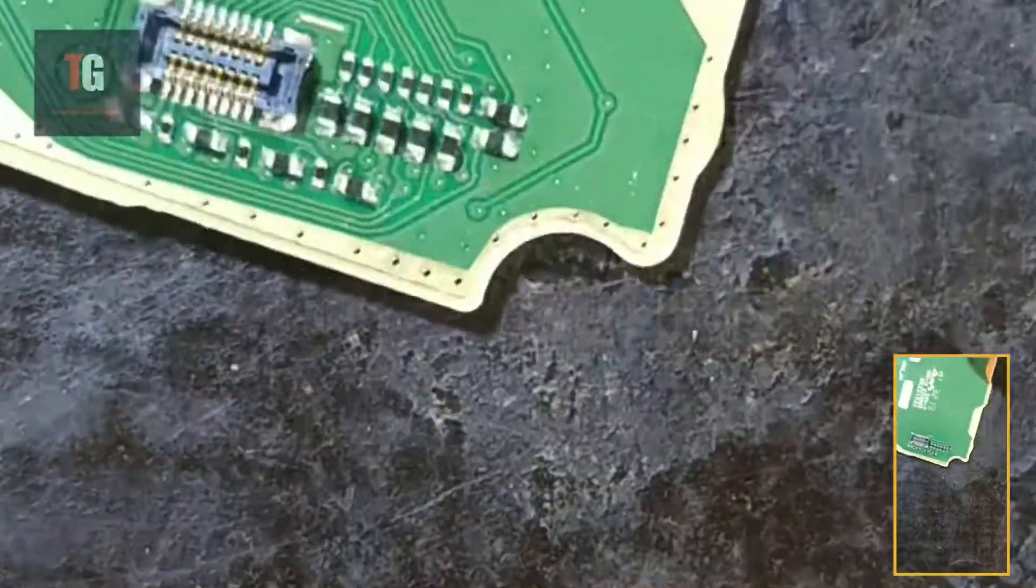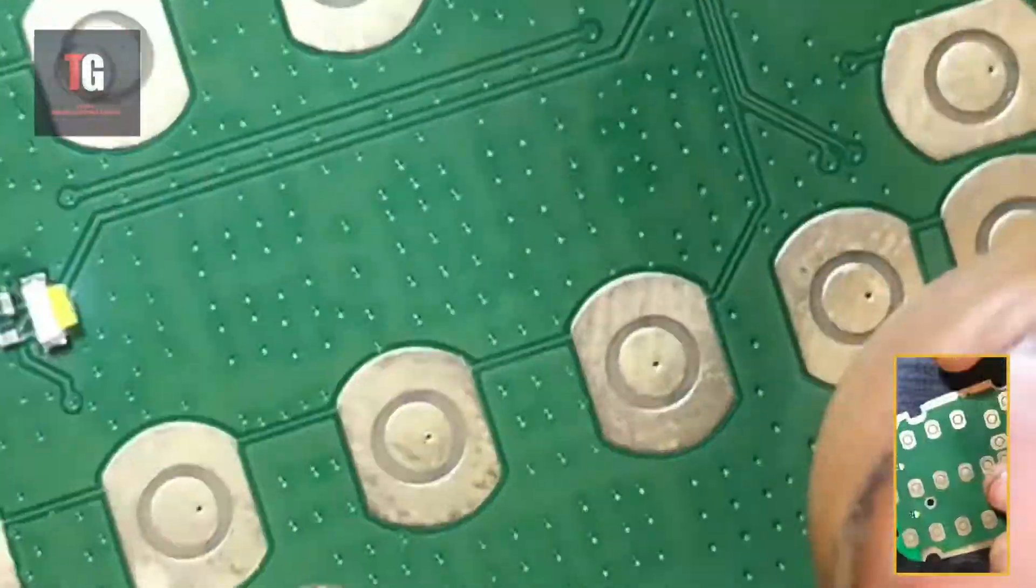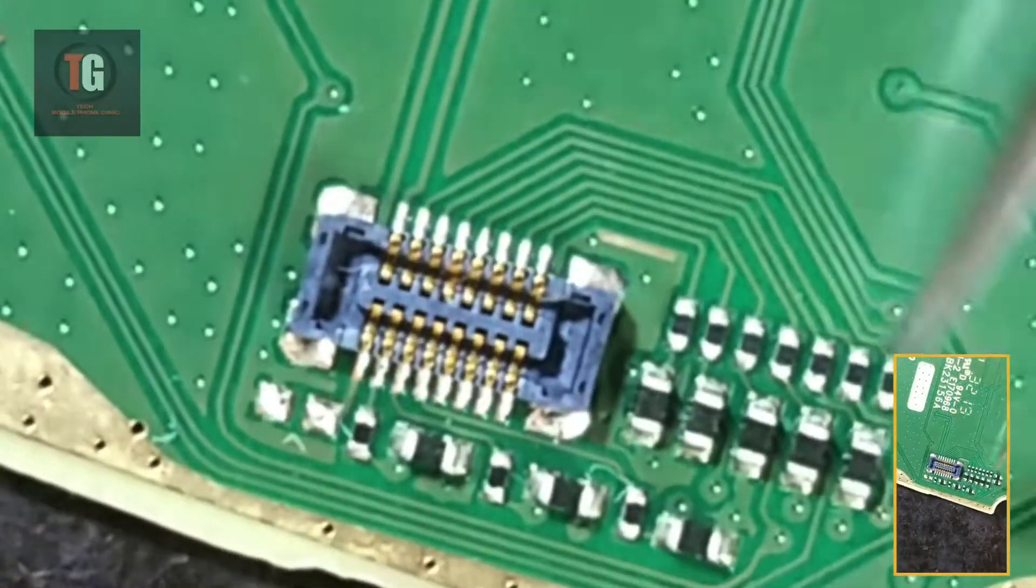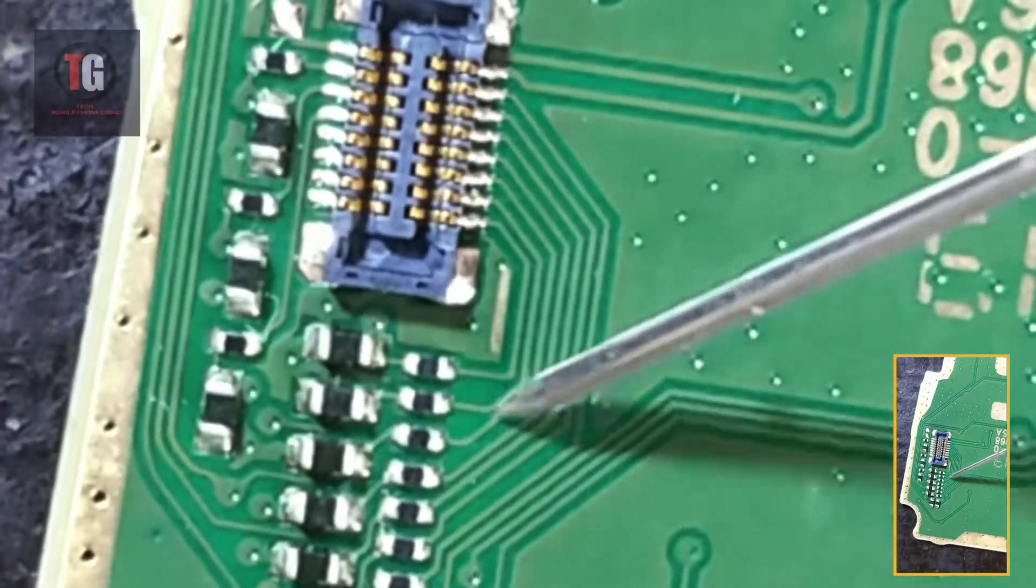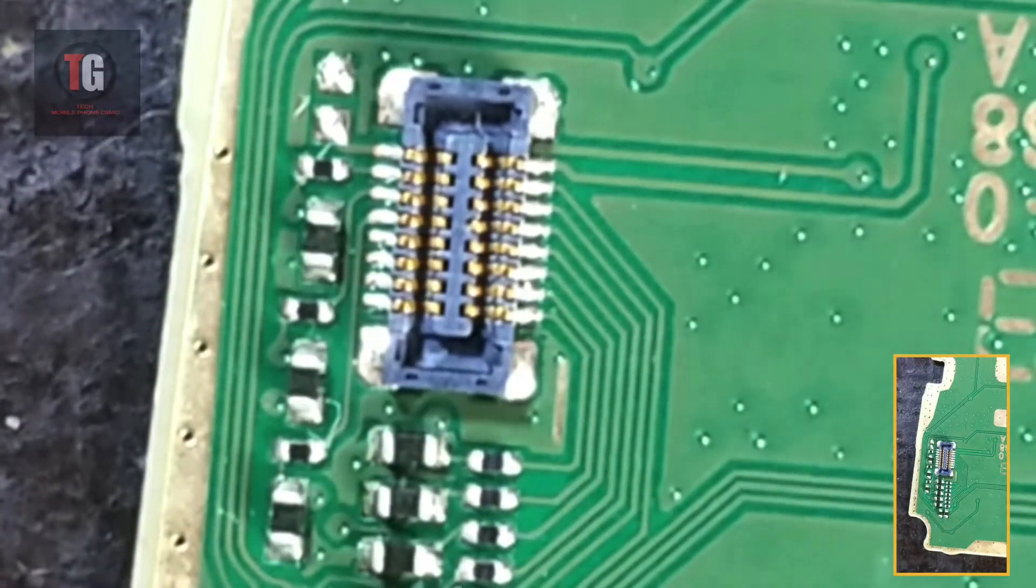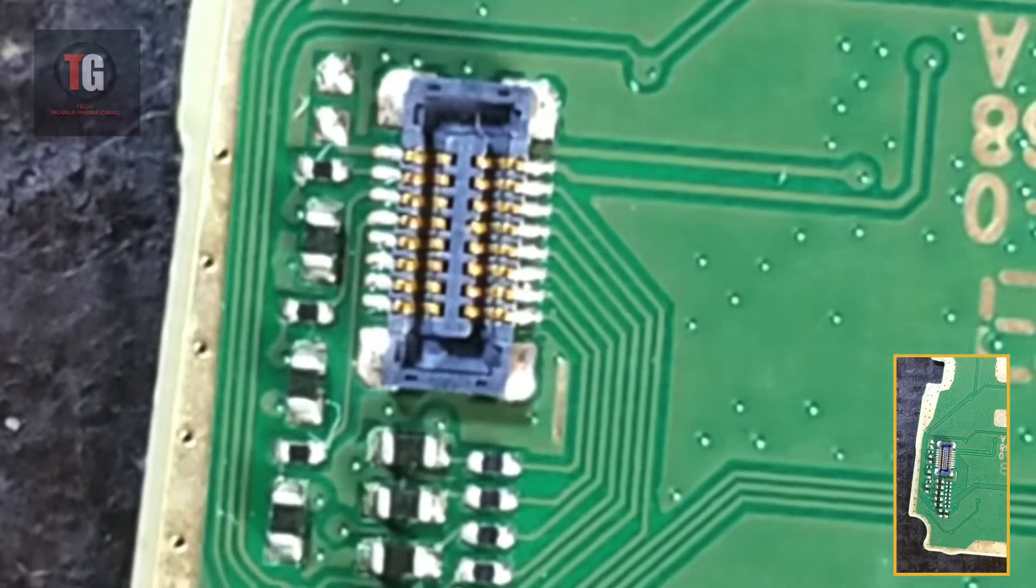Because at times the insulator on the jumper wire may be failing. That's where you see something like brown color on there, that is the insulator. So at times those may peel off, and once it peels off, if you do not tape it properly, it's going to bridge to the ground of the board. So to avoid bridging, make sure you tape it well after soldering.